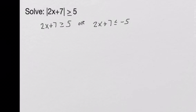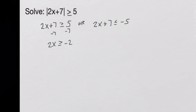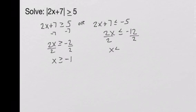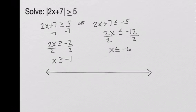Solving each inequality: we subtract 7 from each side, giving 2x greater than or equal to negative 2; dividing both sides by 2 gives x is greater than or equal to negative 1. We see similar numbers as before, but we want to compare what happens with our parentheses and brackets. To get a visual, let's draw a number line with 0, negative 1, negative 2, negative 3, negative 4, negative 5, and negative 6.